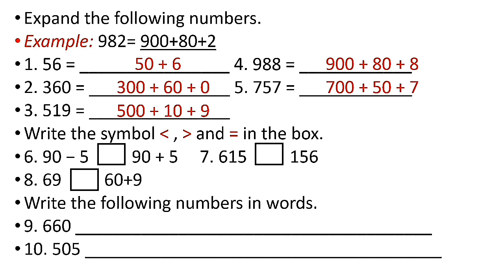Number six: 90 minus 5 [box] 90 plus 5. What will you write? Is it less than, greater than, or equal? You have to write greater than, because although they have the same numbers, the signs are not the same. The first one is 90 minus 5 and the second is 90 plus 5, so you write the greater than sign.